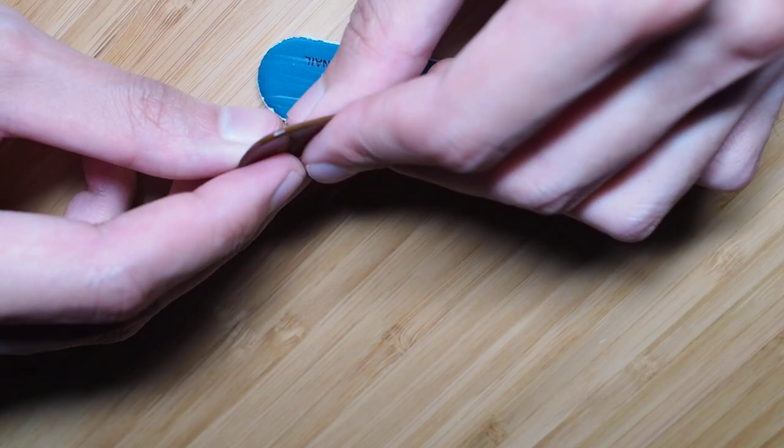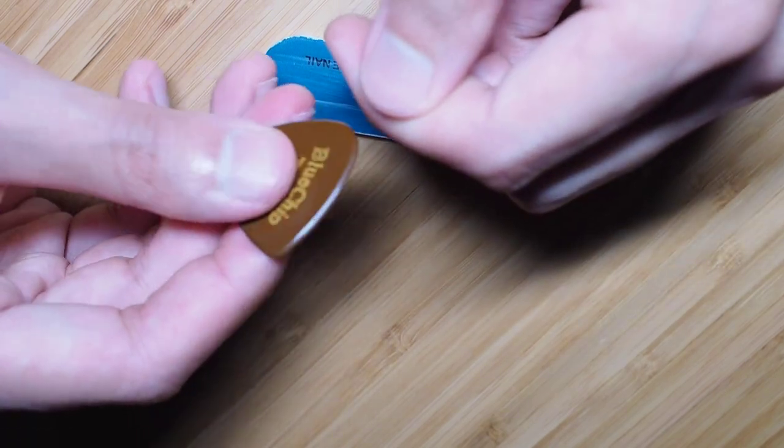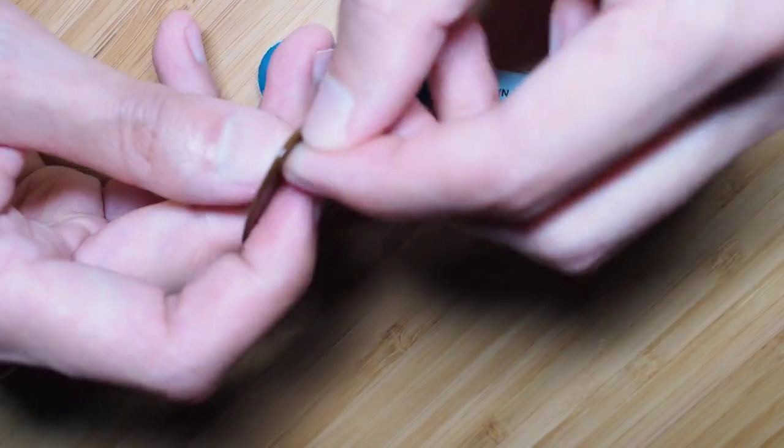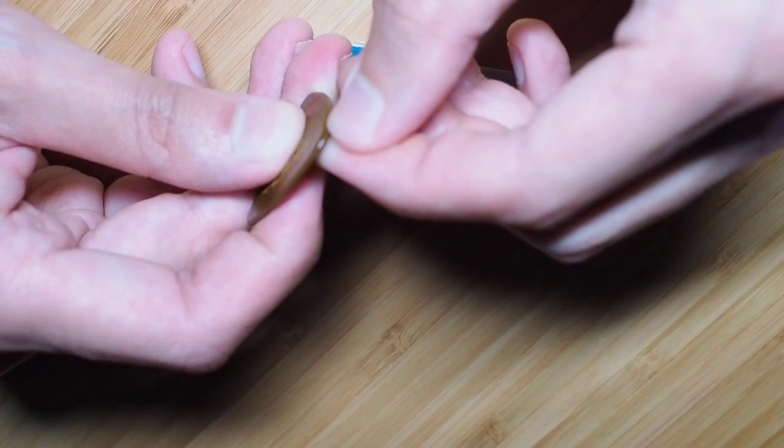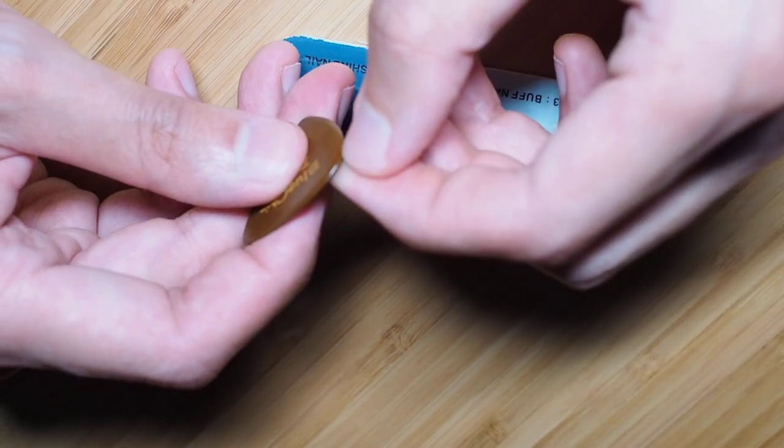And when you run it over like a high B string, you won't hear any kind of pick noise. And that's how you know when you have a perfectly smooth edge. And that'll help you get a much smoother, rounder tone without any of that pick scratchiness.